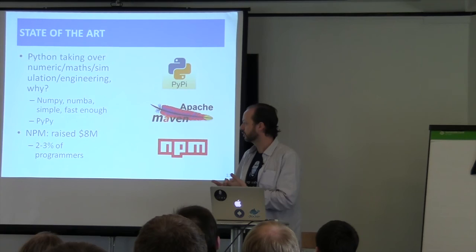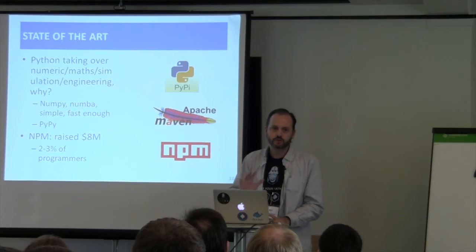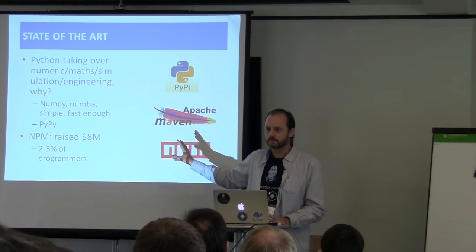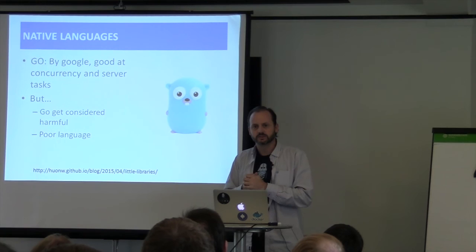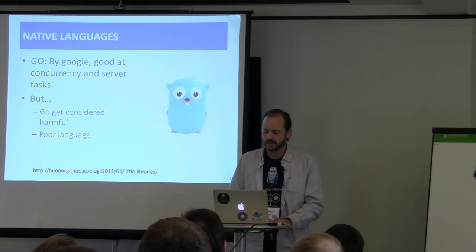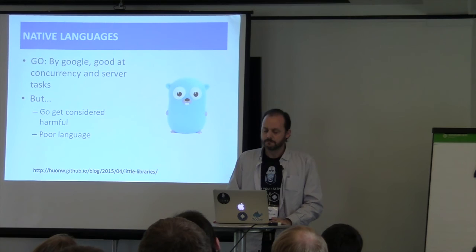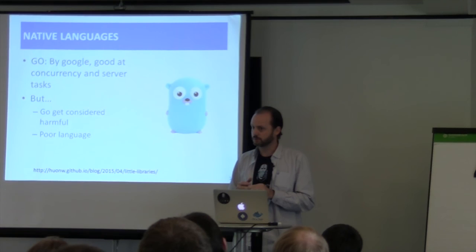NPM for Node just raised $8 million about a month ago in a second financing round. It's only used by 2% of the world's programmers, and we are much bigger than them. So what could be the value of something similar in the C and C++ environment? What about native languages? Go is a strong contender from Google — it works well for certain things and has an active community. They built a dependency manager called GoGet, but it's considered not as successful as it should be. There are articles saying it's harmful, though they are working on it.